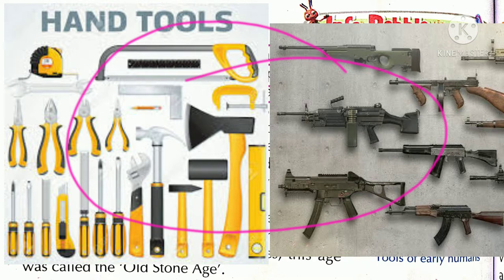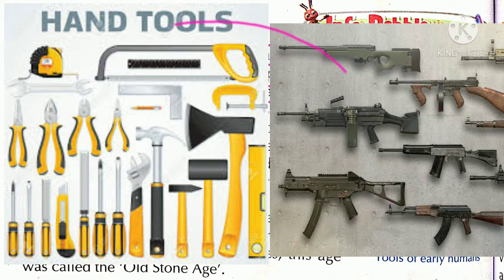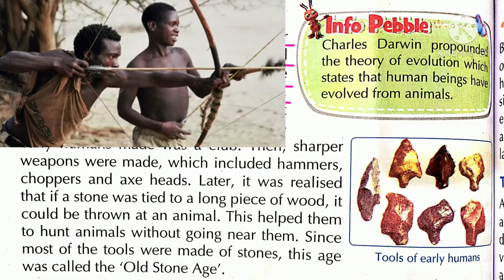Humare pas kya kya hai tools — dekhi hai, X hai, hammer hai, gun hai na. Kya adi manov ke pats yai saray thay? Nahi. Unke pats simple tools thay. Early humans only had simple tools.